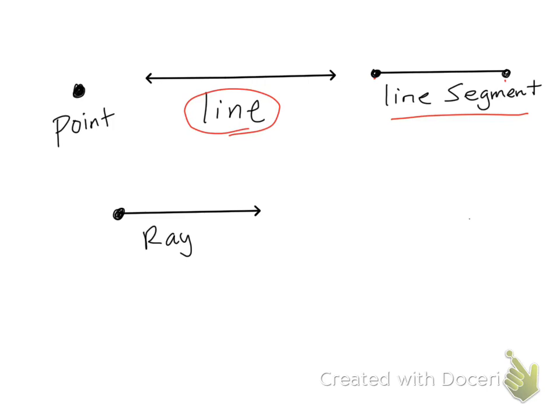And then a third type is a ray. A ray begins at a point and then continues on forever. This is what each of those look like. And a point of course is just a dot.